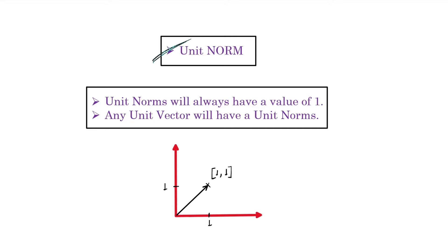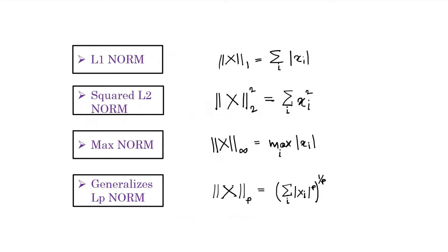Since we are now familiar with the L2 norm, it will be easy to understand unit norm. In very simple words, unit norm is nothing but a norm with a value of 1. As you can see, we have a vector here with elements [1, 1], and the norm for this unit vector will give you a value of 1. Unit norms will always have a value of 1, and any unit vector will have a unit norm.